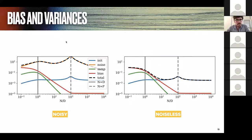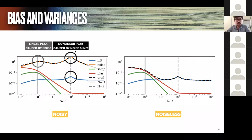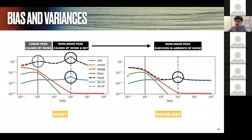We also want to understand the divergence in terms of bias and variance. We already know from the first part that the nonlinear peak is caused by noise and initialization variance. But the linear peak at N equals D is caused only by noise — nothing special happens to the initialization variance. An important consequence is that in the noiseless case, where there is no noise in the labels, the linear peak dies, but the nonlinear peak survives. This explains the curious phenomenon in deep learning that even without noise, you can still observe the overfitting peak.